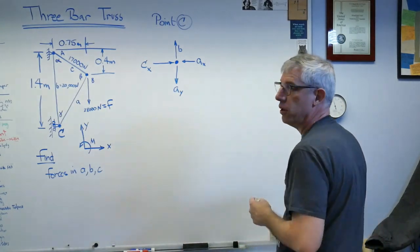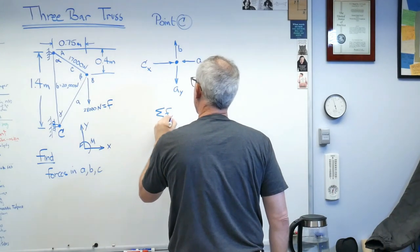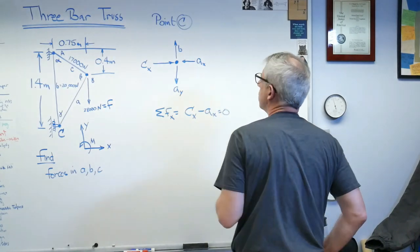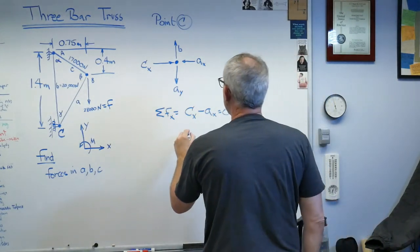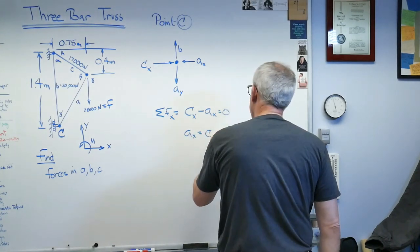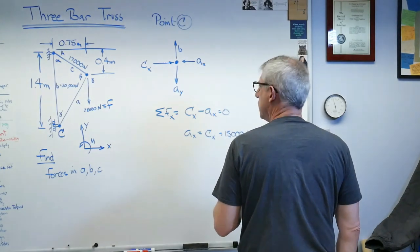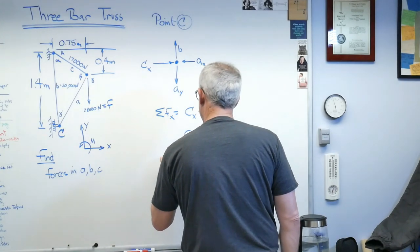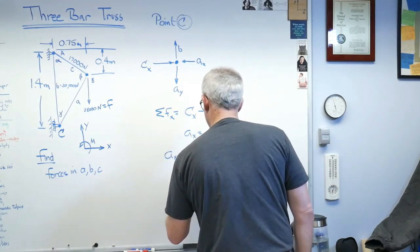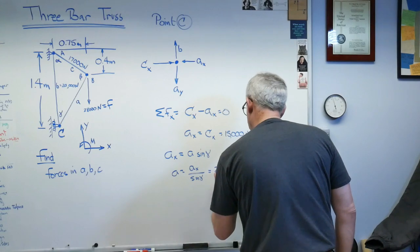Summing forces in the X direction at point C: capital C_X minus A_X equals zero. So A_X equals capital C_X, which we know is 15,000 newtons. And since A_X equals A sine gamma, then A equals A_X over sine gamma. That works out to 25,000 newtons.